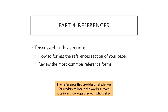We're really talking about that reference list at the end of your paper. That reference list provides a reliable way for the readers of your paper to locate the works cited to acknowledge previous scholarship. So if a reader sees Harris 1989 mentioned in your paper and wants to know more about that study, they can find that in-text citation and turn to your reference list to find more about that journal article — exactly where it was published — and then go to their librarian and look it up.